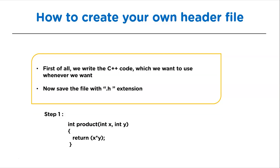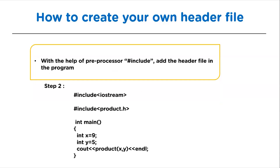Now let's learn how to create a header file. In order to create your own header file, first we will write the C++ code which we want to use whenever needed. After that, we will save the file with a .h extension. As we can see in step 1, we have written the code of two integers that are getting multiplied. To include this in the program, we use #include and write the name of the header file inside the angle brackets with the .h extension.